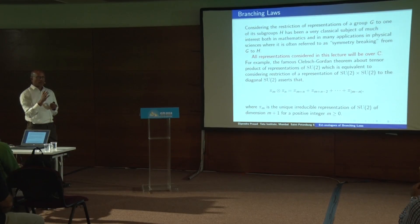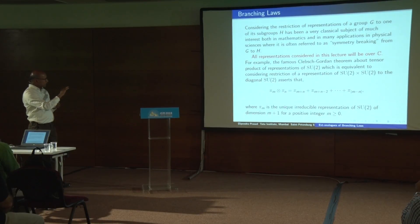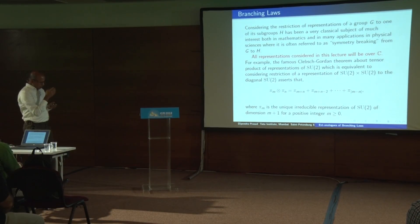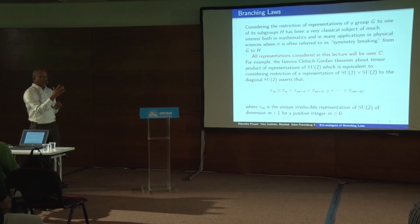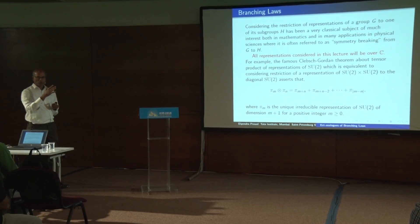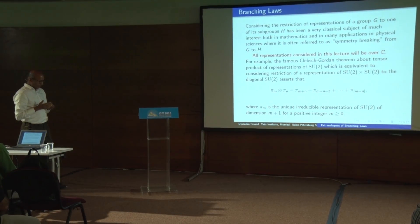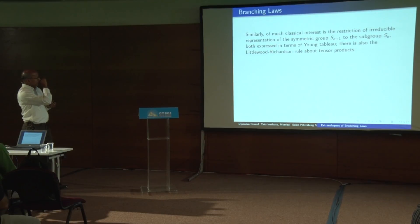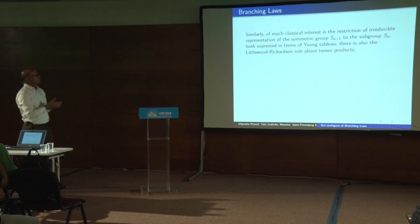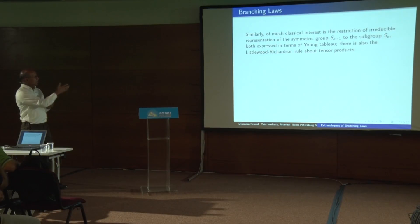You decompose a representation of a bigger group — in this case SU(2) × SU(2) — restrict it to the diagonal SU(2), and ask how it decomposes. Questions of this kind about tensor products, about restriction from classical groups to smaller classical groups, have been well studied. There are also questions on the symmetric group from S_{N+1} to the subgroup S_N, which also has a very beautiful answer, and then there are also the more complicated Littlewood-Richardson rules.